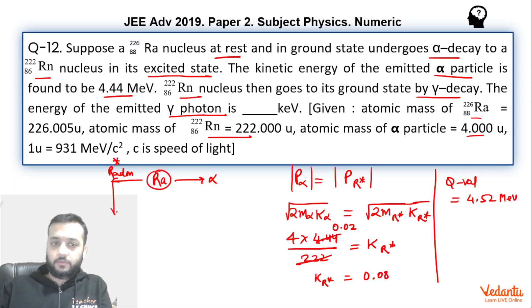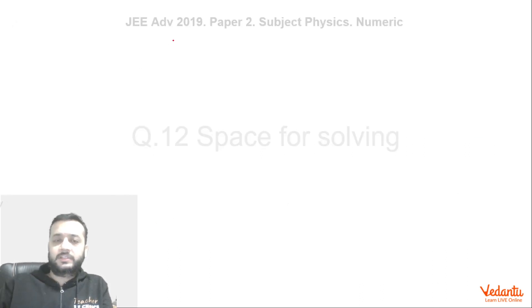Now this radon further goes into gamma emission and it spits out radon in the ground state plus gamma ray. Right, now if originally this reaction had occurred where radium gave radon plus alpha particle, that means if radon had not been formed in the excited state, then what would be the Q value of this reaction?